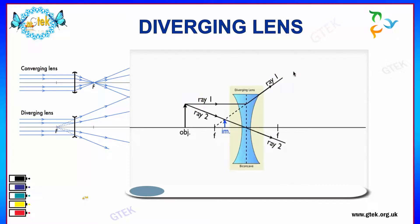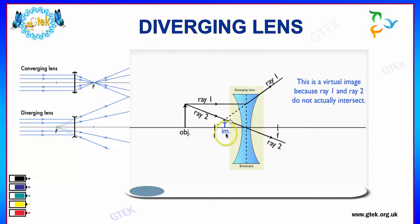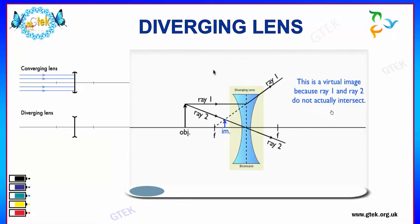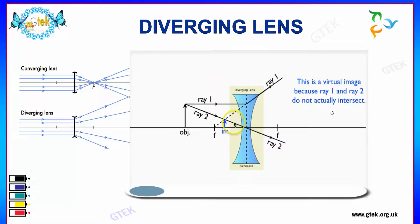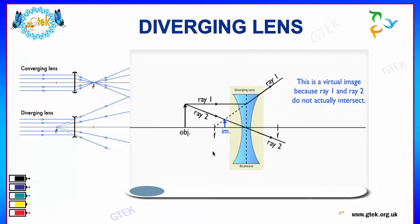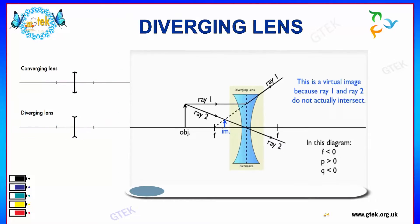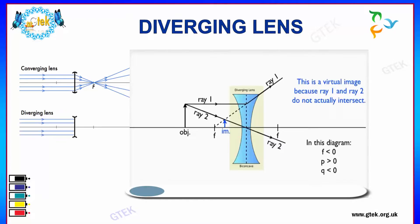This is considered to be the object, and this is considered to be the virtual image, because ray 1 and ray 2 do not actually intersect — you can see these two rays are not getting to be intersected. In this diagram, f — the focus — is less than 0, p is greater than 0, and q is less than 0. These represent the ray 1 and ray 2 diverging lens formation.